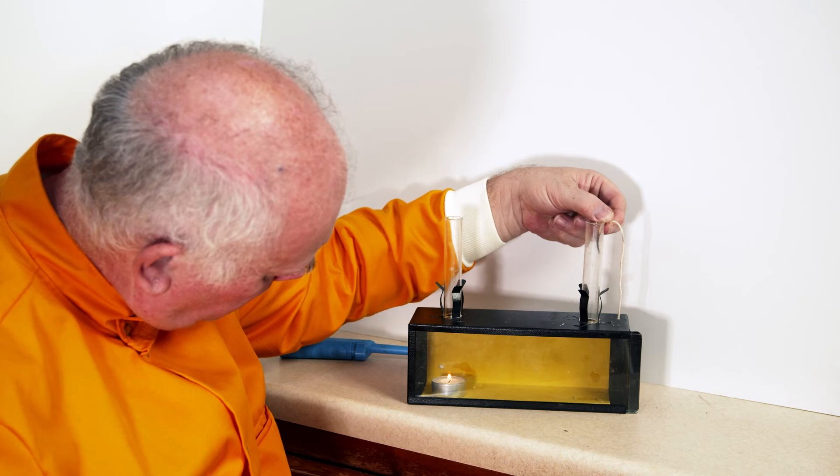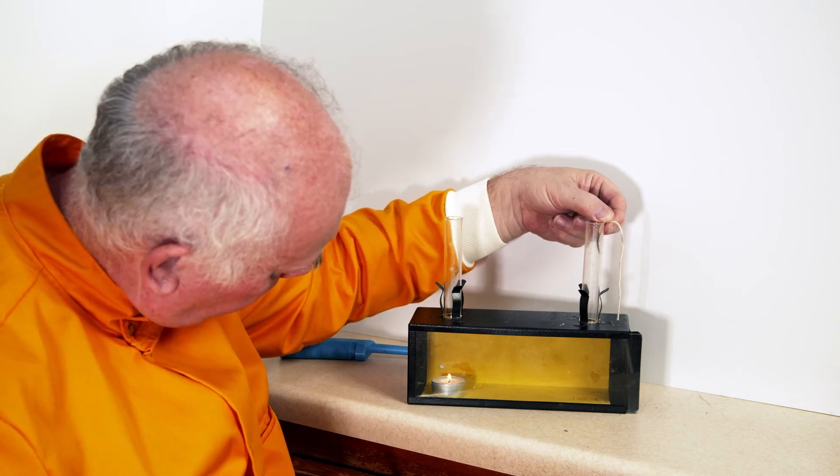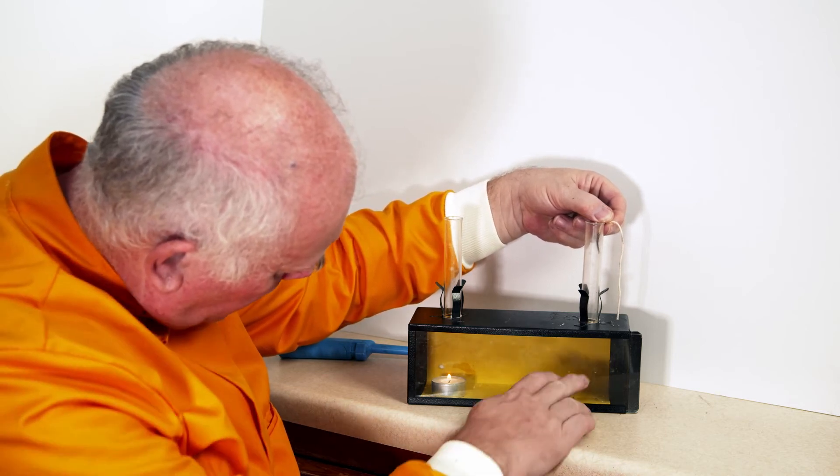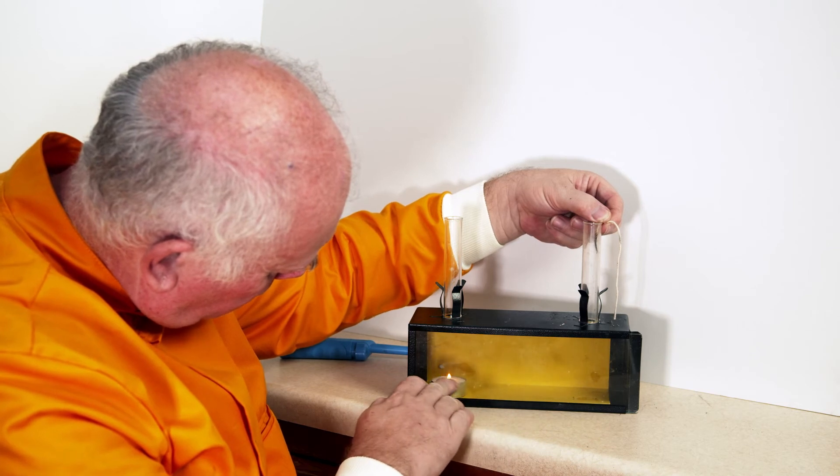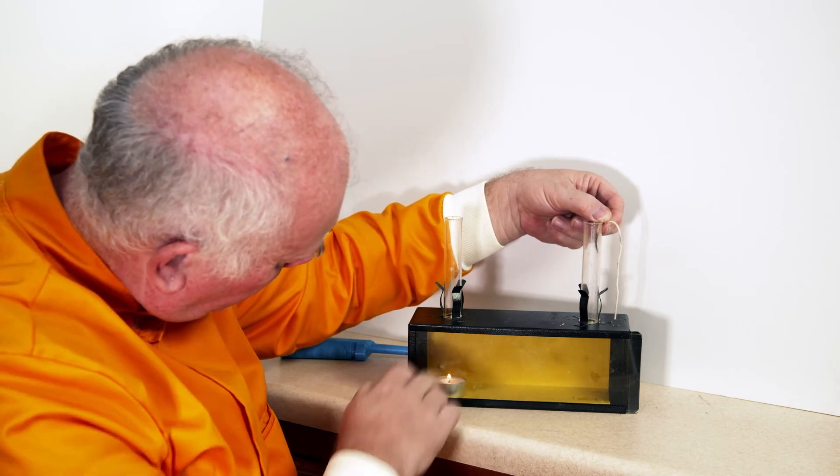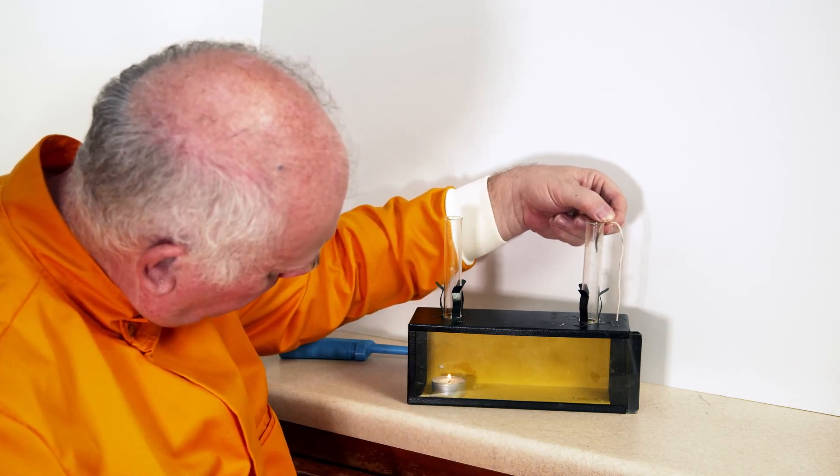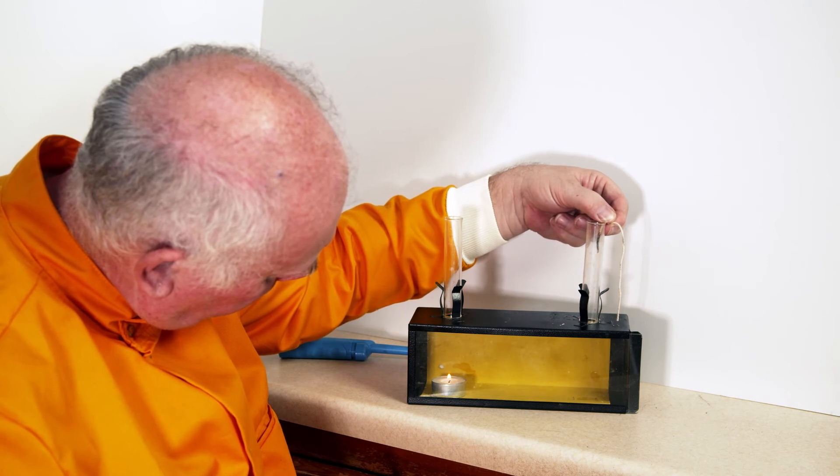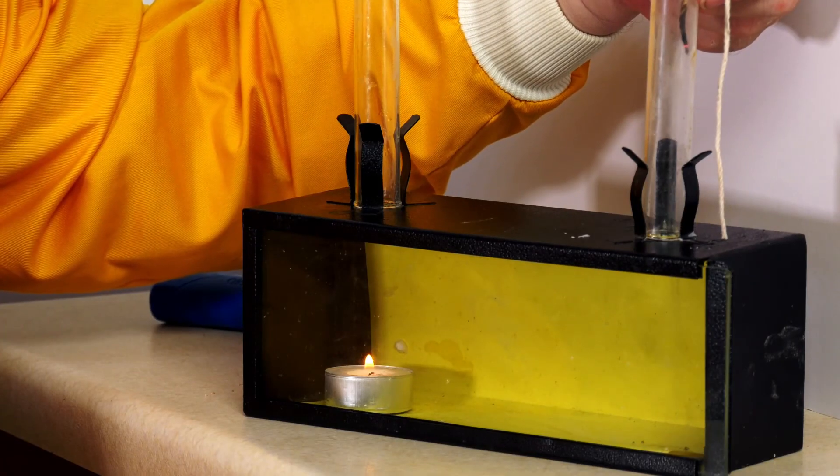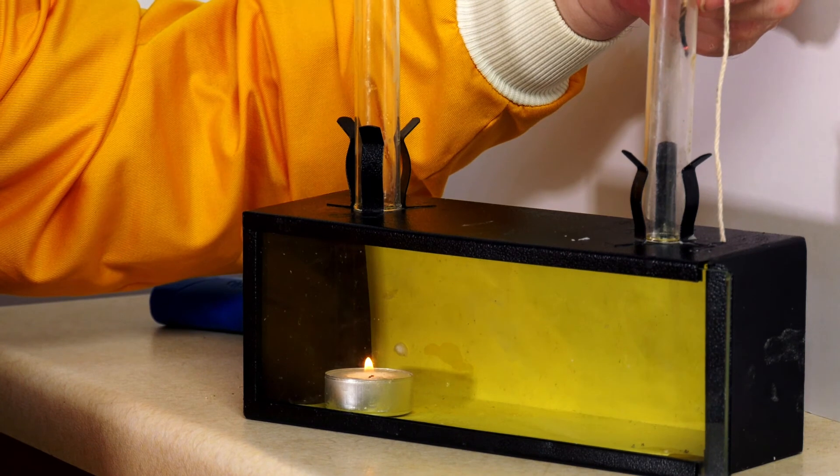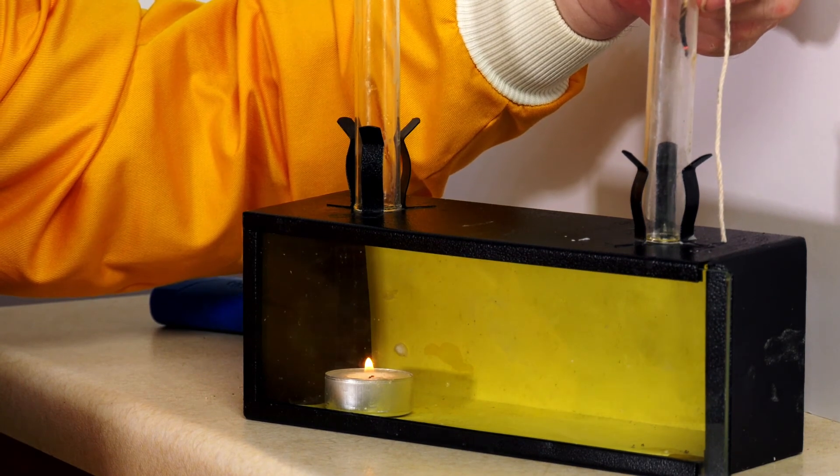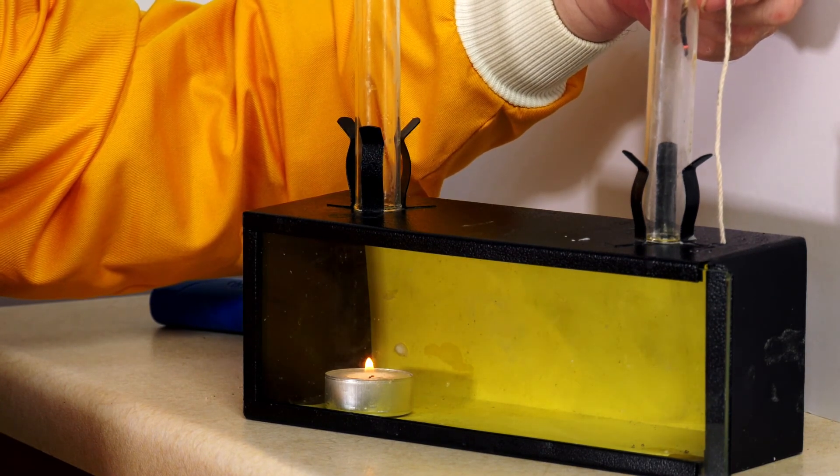We can see the smoke going down and being dragged along where it reaches this flame and starts to come out the other way. So there we've got our convection of air.